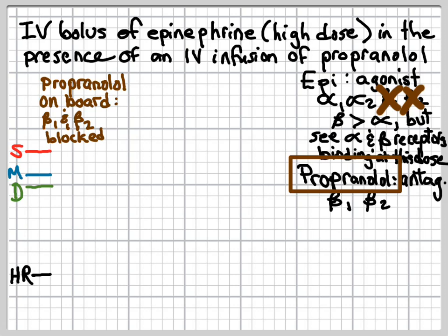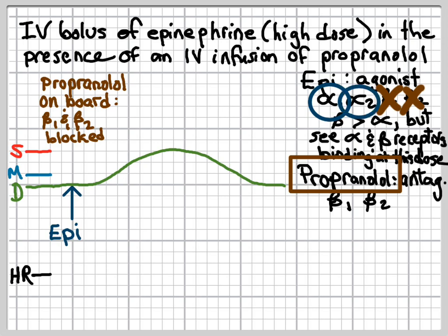When we give epinephrine, it will only have an effect on the alpha-1 and alpha-2 receptors. The effect of epinephrine via alpha-1 agonism on diastolic pressure will be to increase it. The effect of alpha-2 agonism is going to be to decrease the magnitude of sympathetic outflow, which will attenuate any response to alpha-1-mediated vasoconstriction because it has a counteracting effect on sympathetic activity.